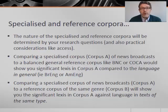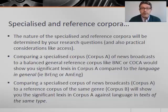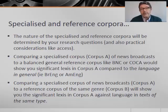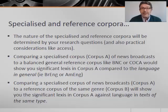Comparing a specialized corpus of news broadcasts to a balanced general reference corpus like BNC or COCA would show you significant lexis in corpus A compared to the language in general — for example, standard British or American English. Comparing a specialized corpus of news broadcasts to a reference corpus of the same genre will show you the significant lexis in corpus A against language in texts of the same type. You could also just compare parts of the same corpus — for example, take the spoken part of COCA or BNC as your specialized corpus and compare it with the written part or the corpus as a whole. So basically you need two things to compare, and you need to think carefully about exactly what you're comparing.